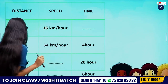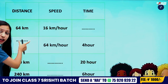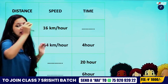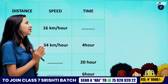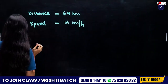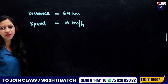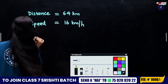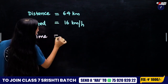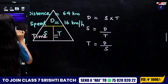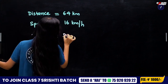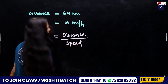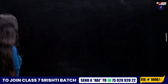Let's start with distance. Distance is 64 km, speed is 16 km per hour, and we have to find time. Distance is 64 km and speed is 16 km per hour. We are talking about finding time — time equals distance divided by speed.